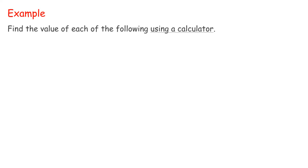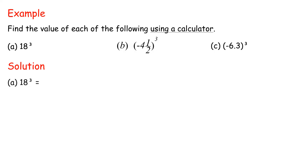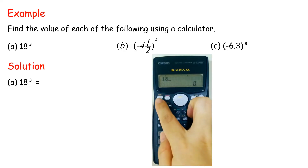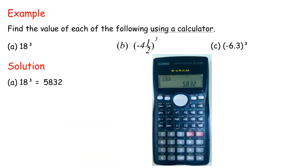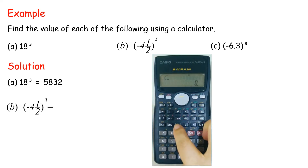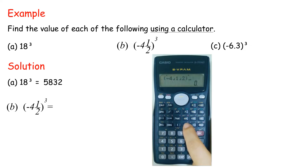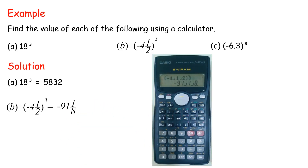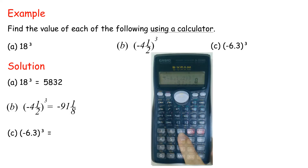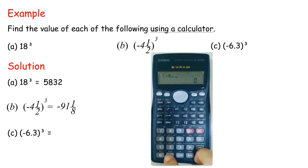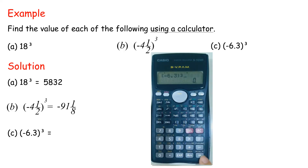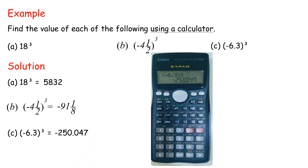Example: Find the value of each of the following using a calculator. Solution A: 18 cubed equals 5832. B: Negative 4 and 1 over 2 cubed equals negative 91 and 1 over 8. C: Negative 6.3 cubed equals negative 250.047.